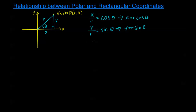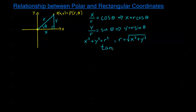We have a couple more relationships. From the Pythagorean theorem, x² + y² = r², and taking the square root gives r = √(x² + y²). Notice we don't write plus or minus — we'll choose an appropriate θ so that r is always positive. We determine θ using tangent of θ equals y over x, assuming x is not equal to zero.